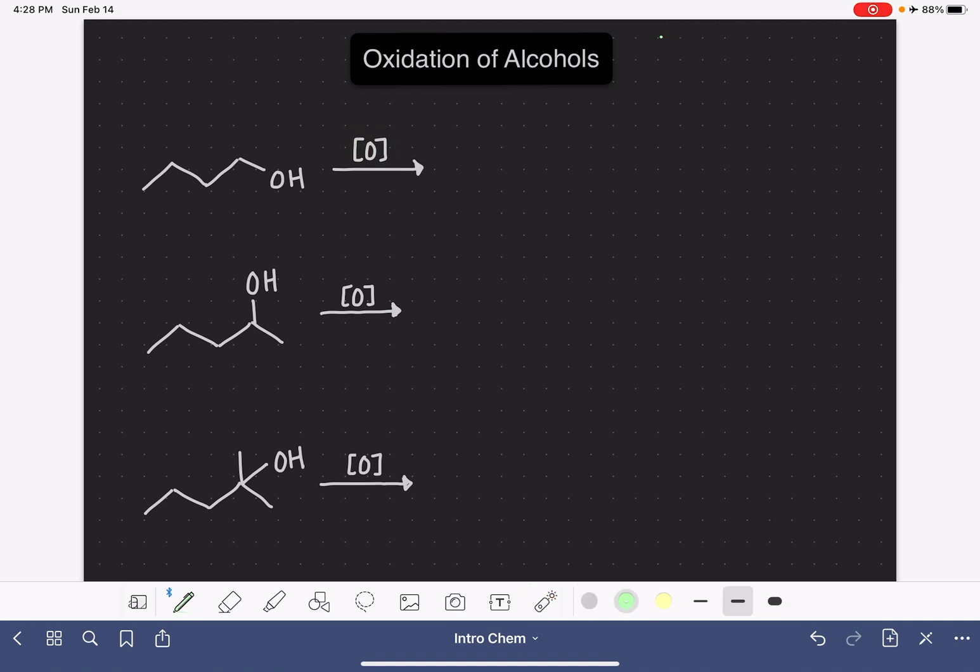There are a lot of different substances that can be used as oxidizing agent, and occasionally instead of writing the O in square brackets, somebody would just write the words oxidizing agent. One of the pretty common oxidizing agents that we come across is K2Cr2O7. So that's just an example of one of the oxidizing agents.